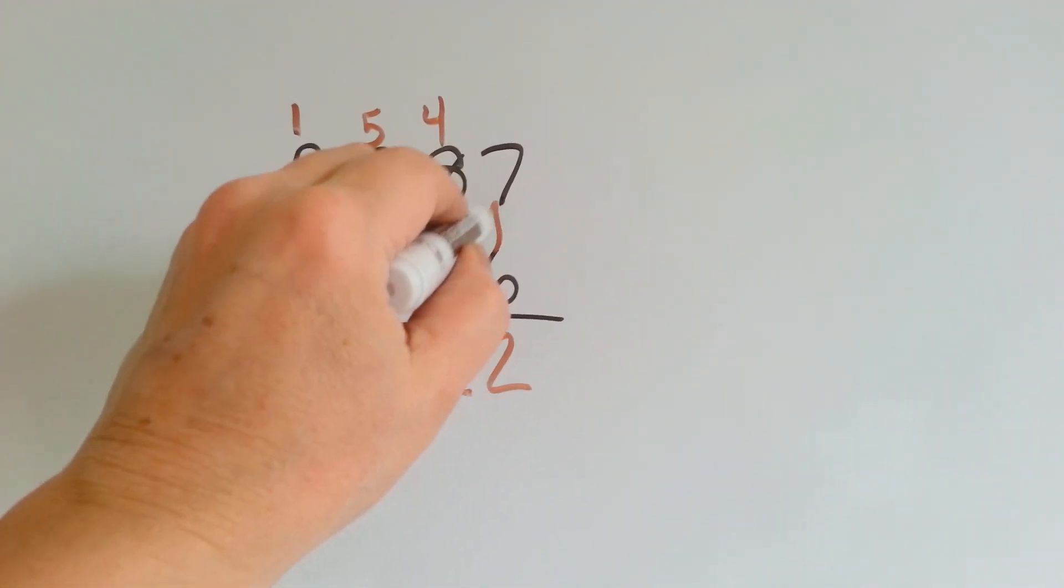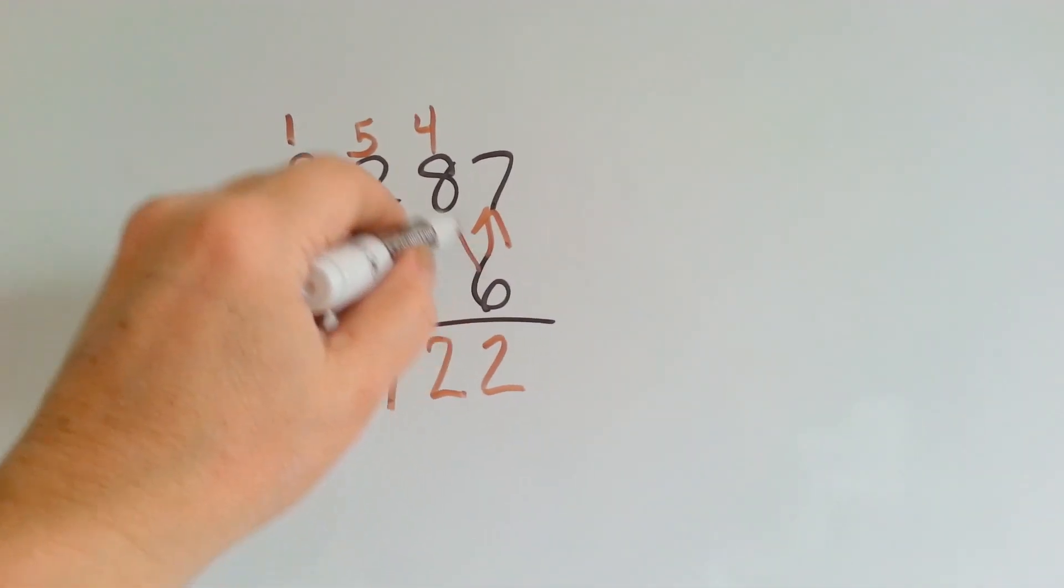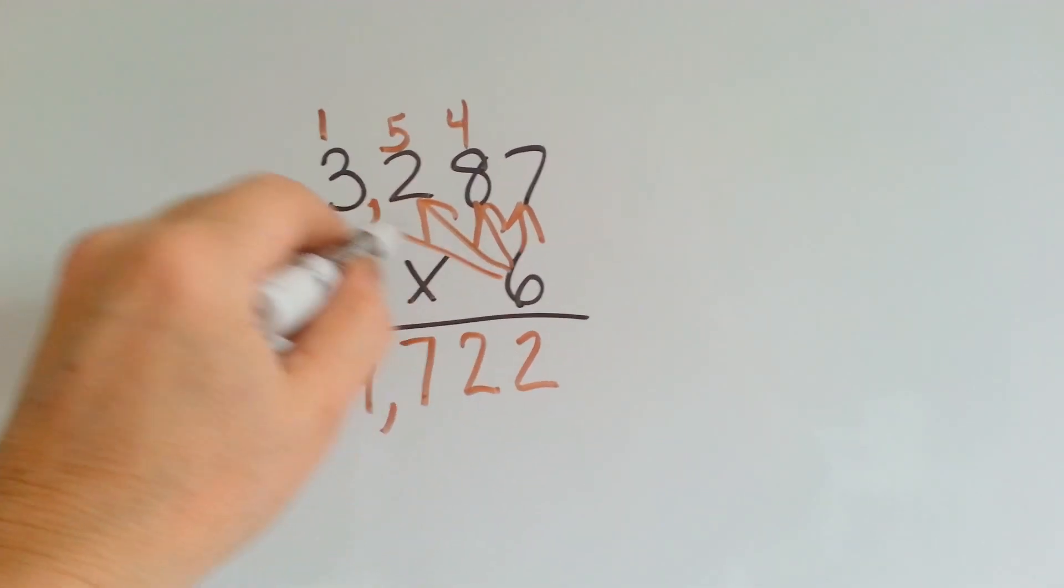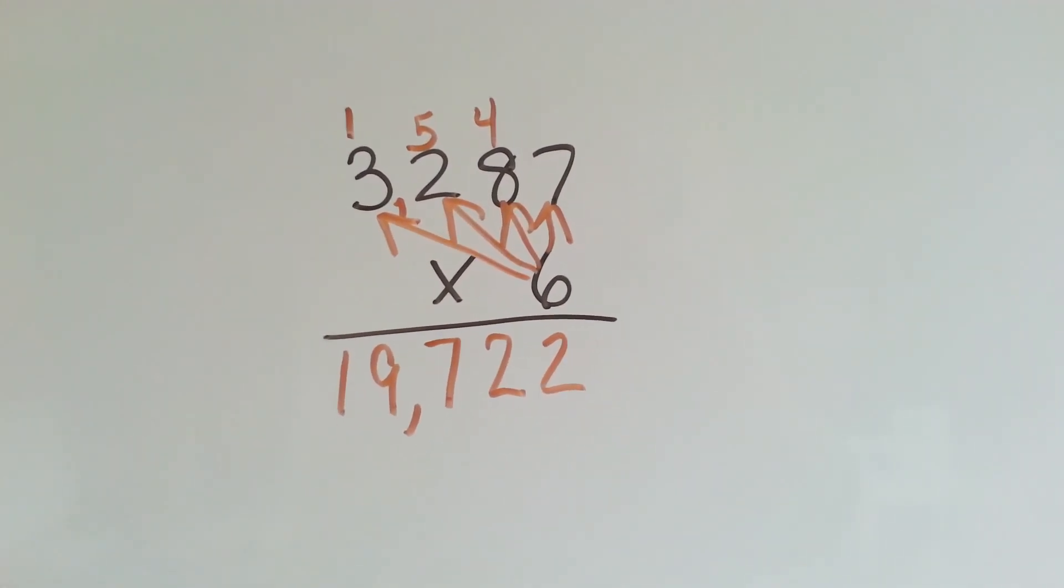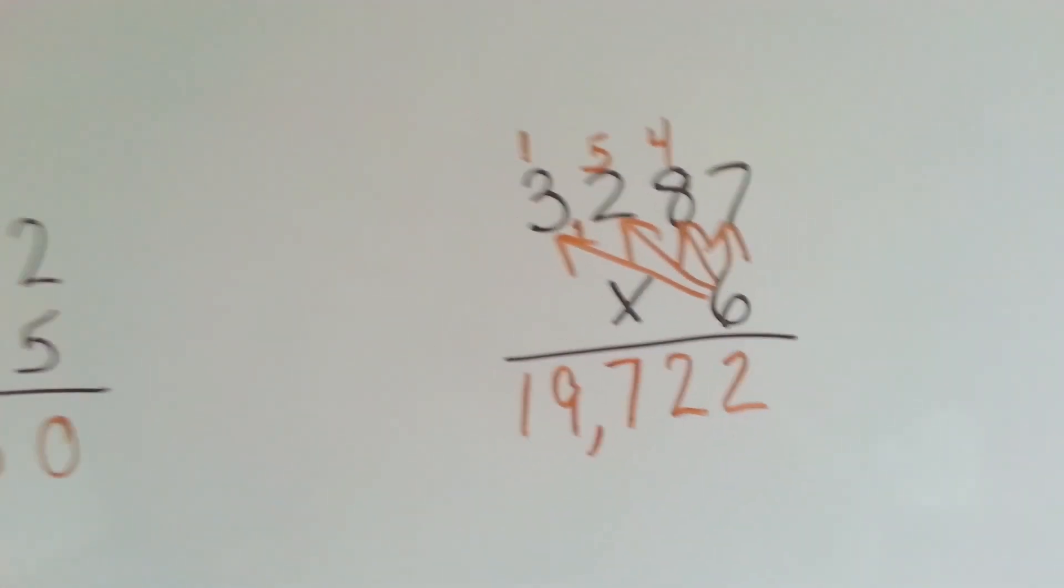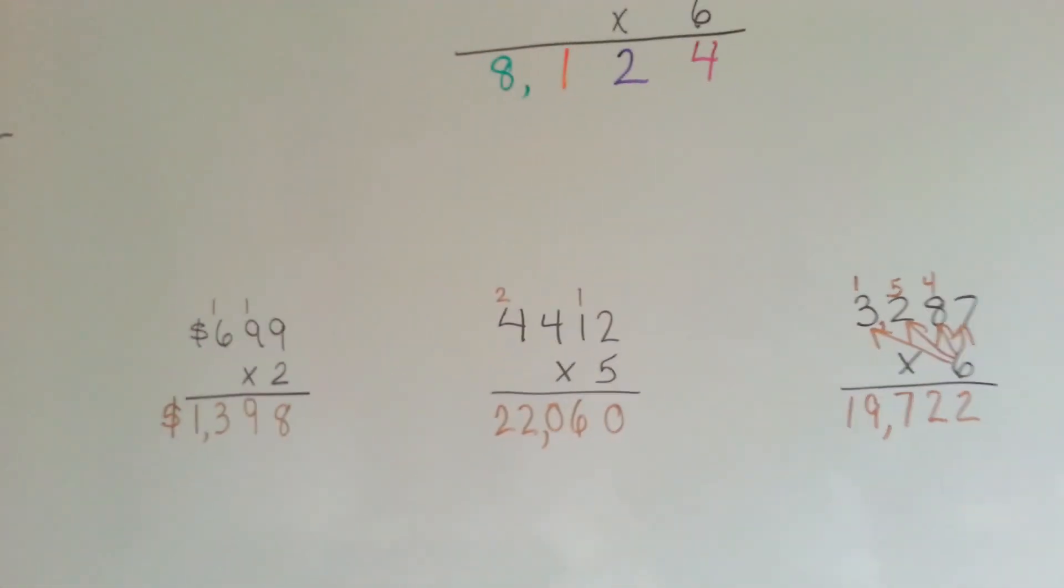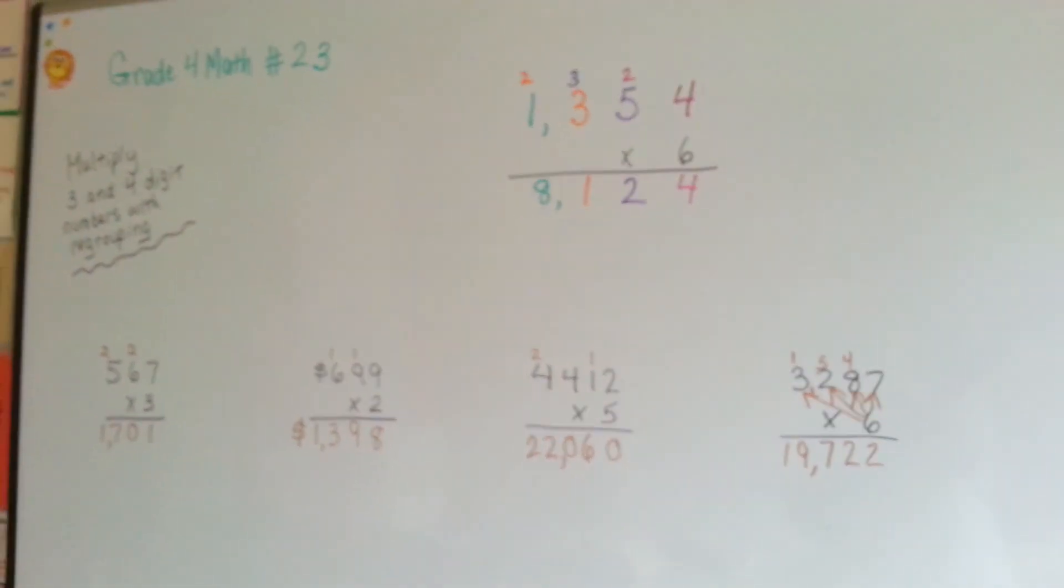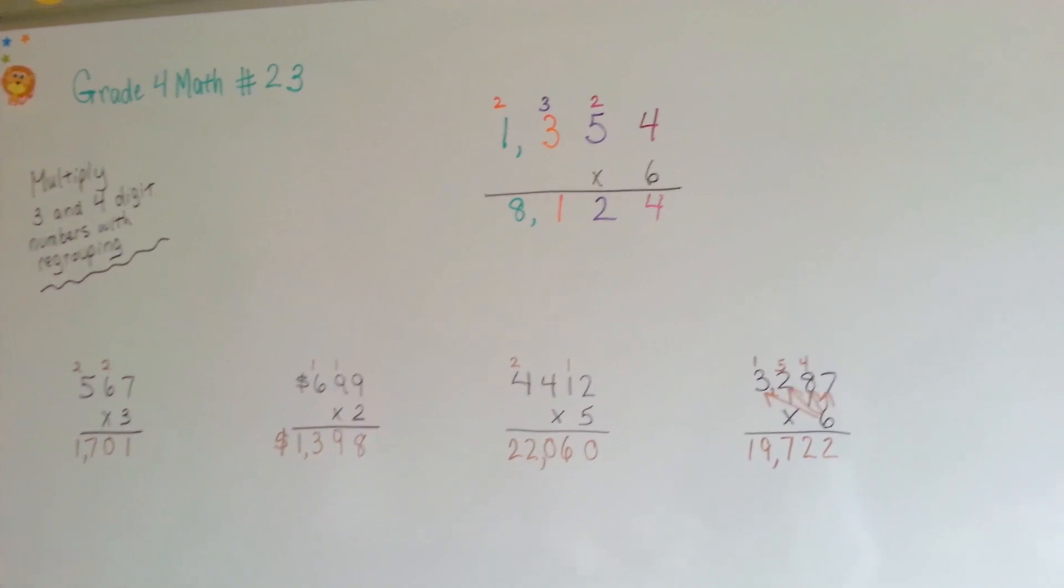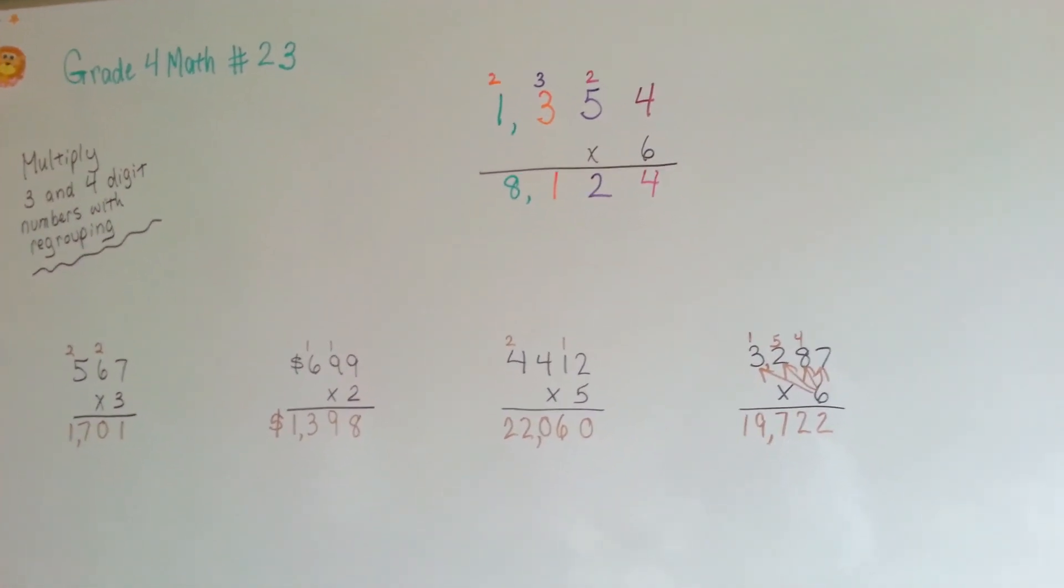Remember, we start with the ones and slowly fan out and go across. That's how you multiply 3 and 4 digit numbers and regroup. See you next video.